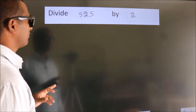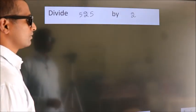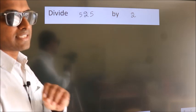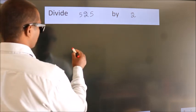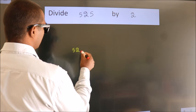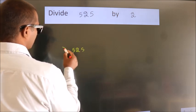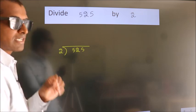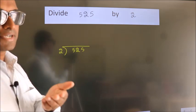Divide 525 by 2. To do this division, we should frame it in this way. 525 here, 2 here. This is your step 1.